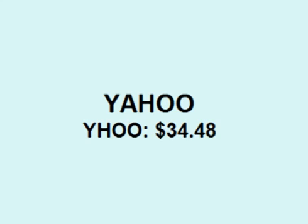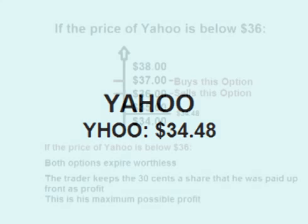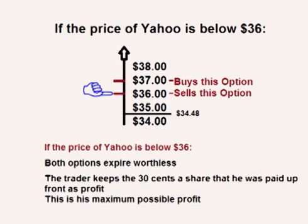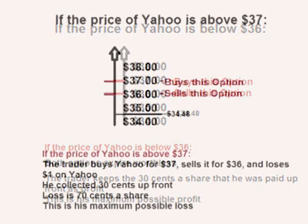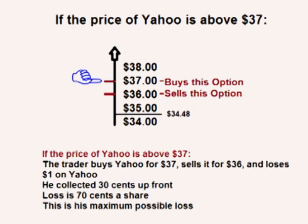So to recap: Yahoo is currently $34.48 a share. If the price of Yahoo is below $36, both options expire worthless and the trader keeps the $0.30 a share he was paid upfront as profit — this is his maximum possible profit on this trade. If the price of Yahoo is above $37, both options are exercised, meaning the trader buys Yahoo for $37, sells it for $36, and loses $1 on Yahoo. However, he was paid $0.30 upfront, so his loss is $0.70 a share.